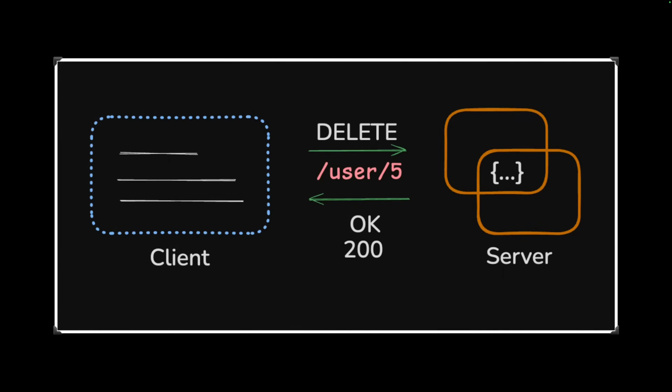After PATCH, let's talk about DELETE. As the name suggests, this method is used for removing a resource. The analogy: you've placed an order for pizza and now you want to cancel it. Just like POST and PATCH, you have to identify the resource you're going to delete — for example, /users/5. Once the deletion is successful you get a response back. The HTTP response code here is 200 for success, though for DELETE operations you might also use additional HTTP status codes.